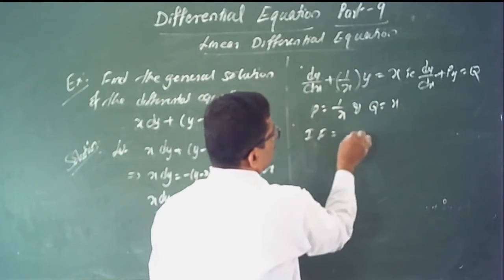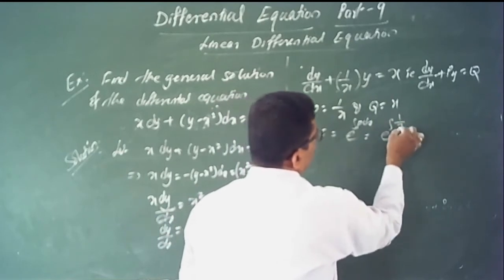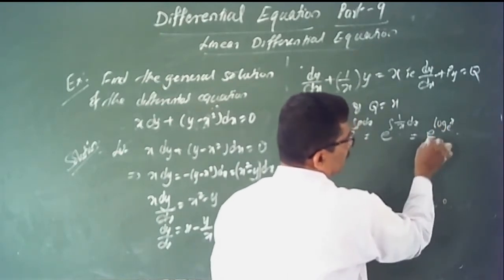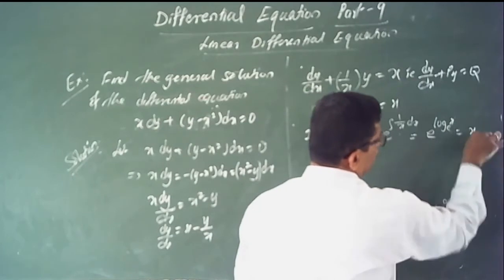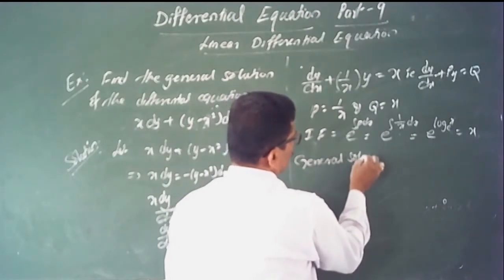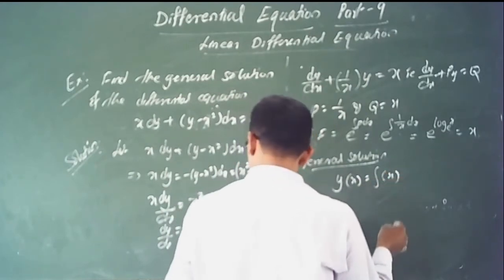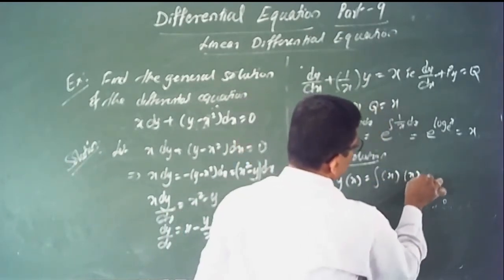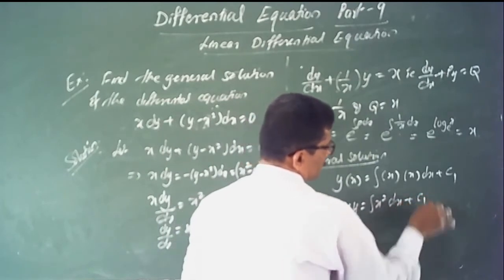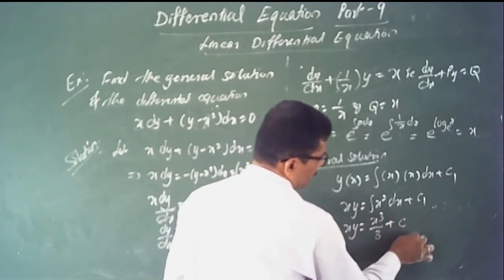The integrating factor is e to the power of the integral of 1/x dx. The integration of 1/x is log x, so the integrating factor is e to the power log x equals x. The general solution is y times x equals the integral of x times x dx plus constant, which is the integral of x squared dx, giving x cubed over 3 plus constant.